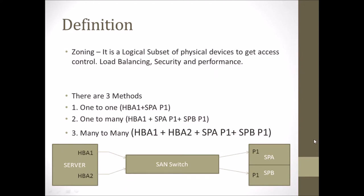In the storage box we have SPA port 1 and SPB port 1 available. In one-to-one, HBA 1 is zoned with SPA port 1. In one-to-many, HBA 1 is zoned with both SPA P1 and SPB P1. Most of the time, if we have a standalone machine, we go with the one-to-many method. In many-to-many, multiple HBA cards — HBA 1 and HBA 2 — are in the same zone, zoned with SPA P1 and SPB P1.